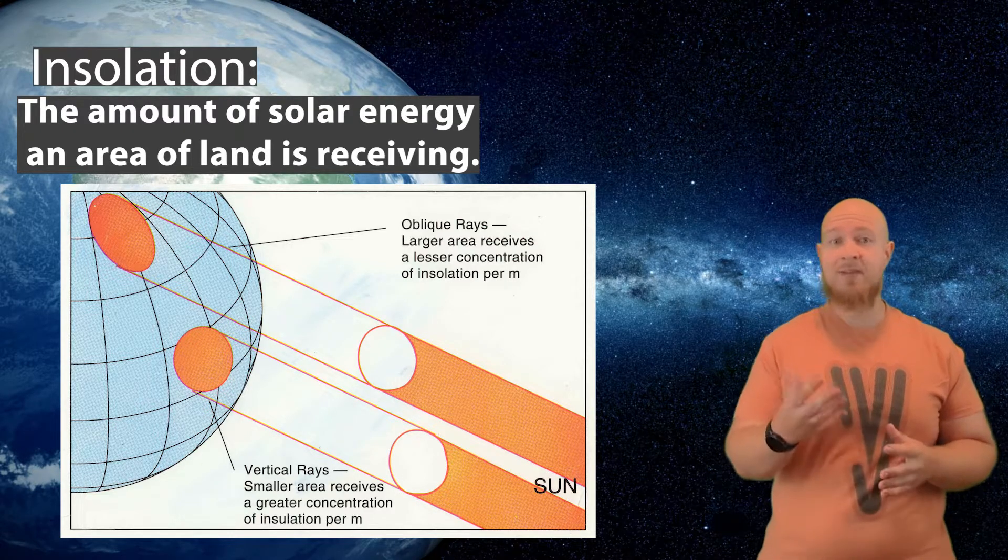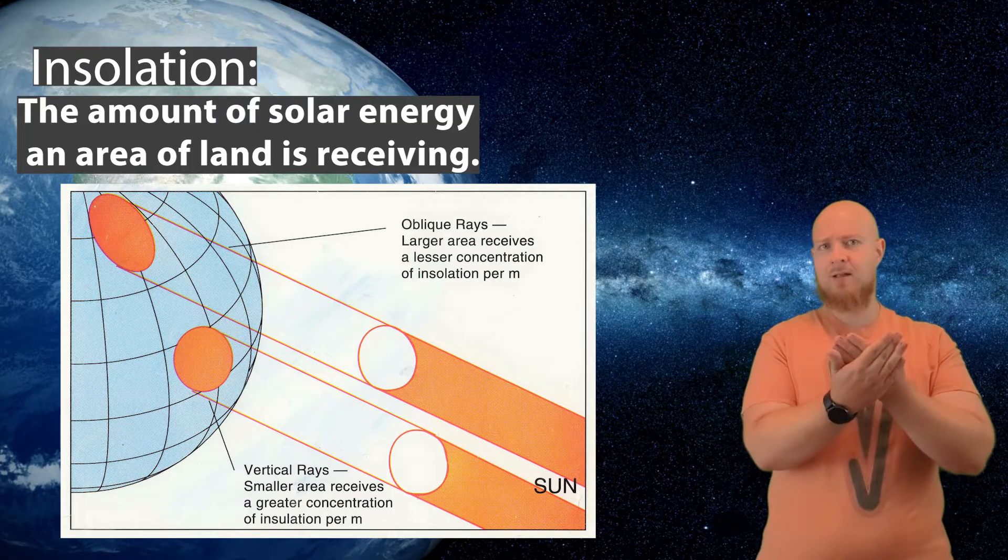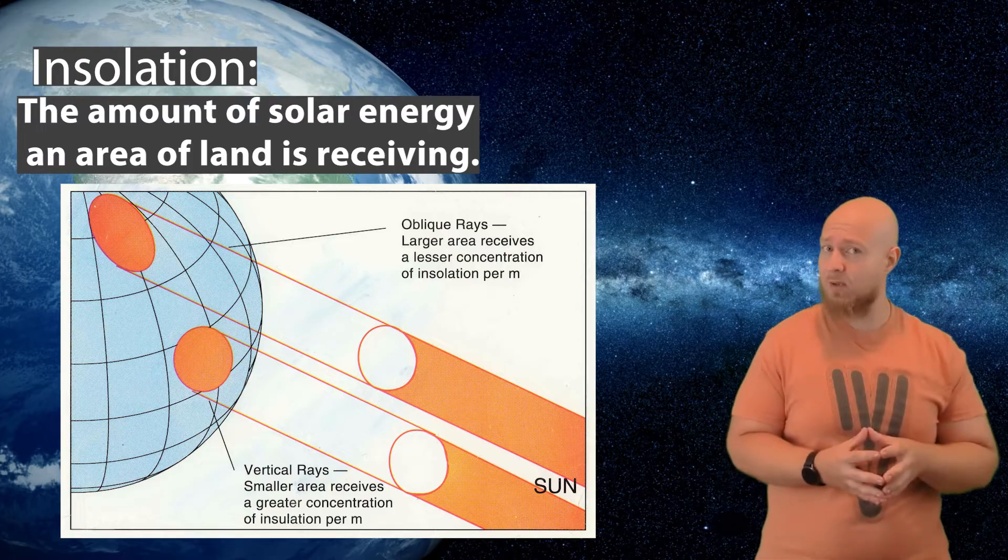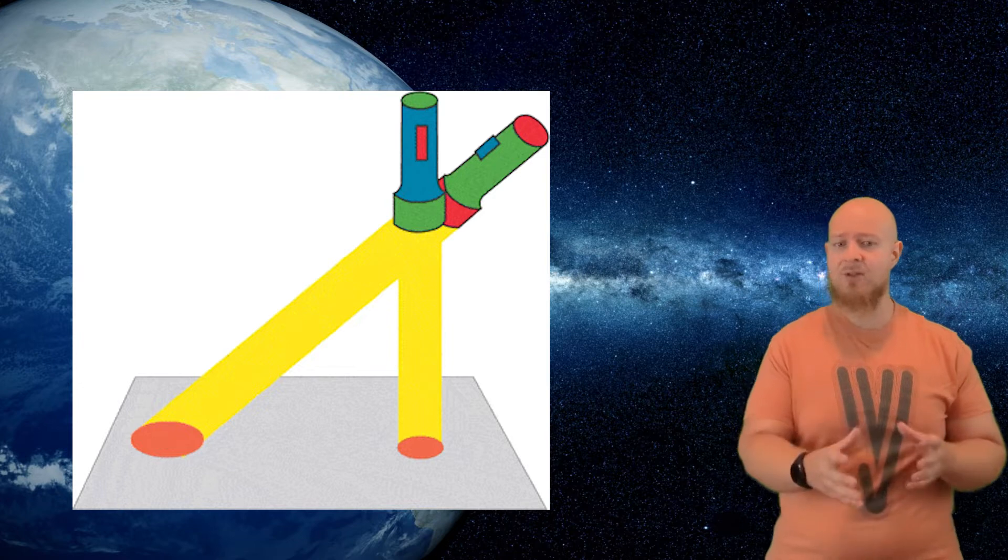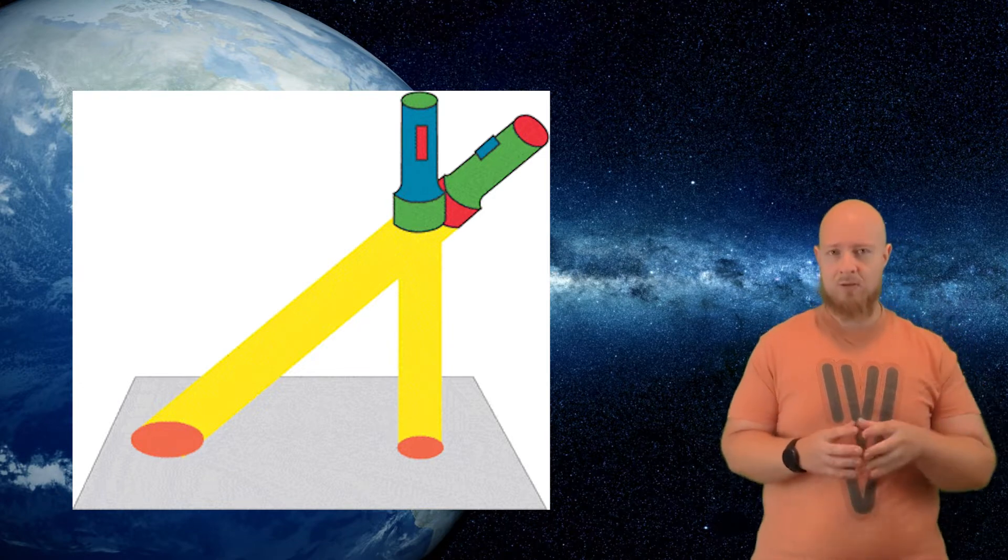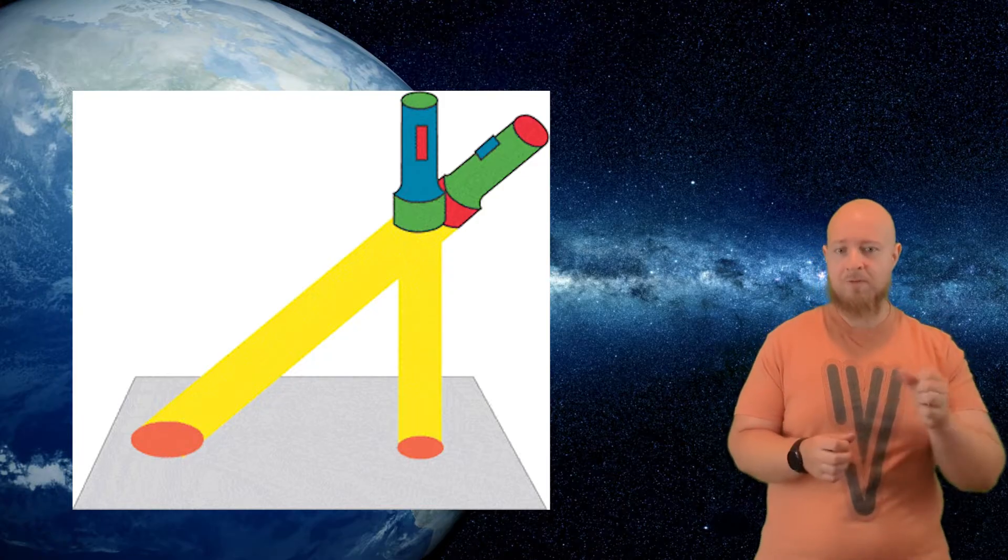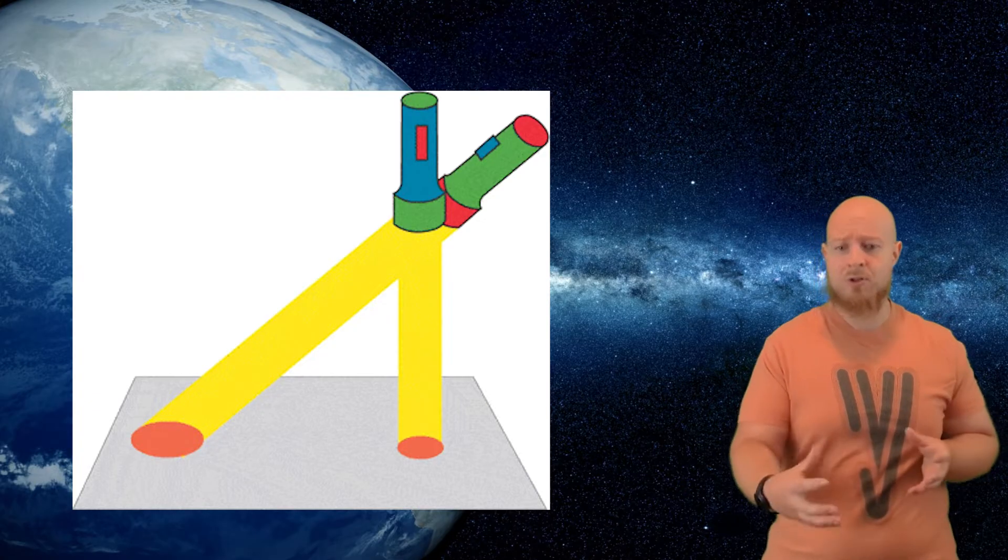Insulation is greatest at the equator where sunlight is essentially hitting the planet face on. Now because the planet is curved, the farther away you get from the equator, the less direct light you are receiving. You can actually demonstrate this yourself - you can grab a flashlight and point it straight down and draw a circle around the light. If you hold the flashlight at an angle, the resulting oval has a much larger surface area.